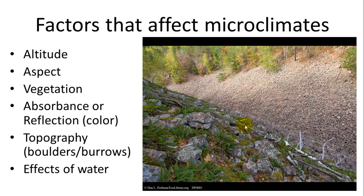Vegetation — its different color and type — whether it provides shading or deflects heat elsewhere, is important. The color of the plant or substrate will absorb or reflect heat in different ways. The topography, whether there are burrows, boulders, or other things causing shade, also matters. And then the effects of water — water has a high specific heat; it absorbs heat readily and holds it longer than air or rocks.